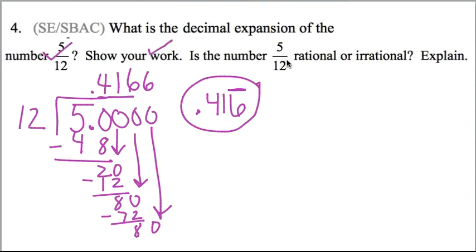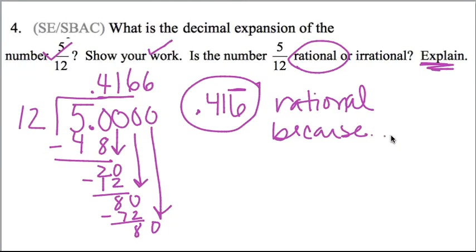I showed my work. Is the number rational or irrational? Well, it's a repeating decimal, so it would be rational. Now when they ask you to explain, I'm asking you, how do you know that it's rational? So rational because, and tell me why? Because any decimal that repeats is a rational number. Because any repeating decimal can be written as a fraction, which makes it rational.